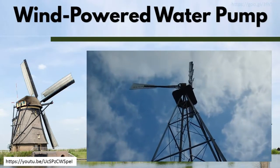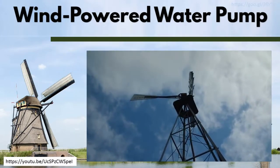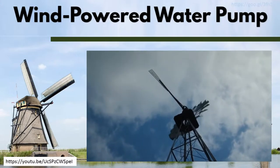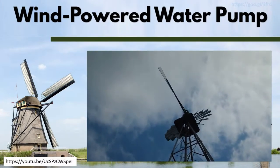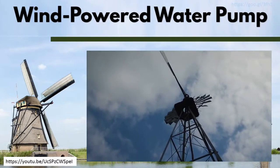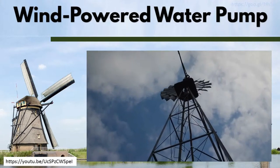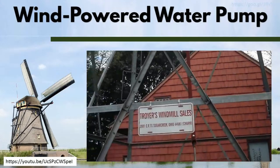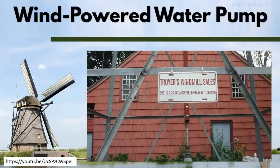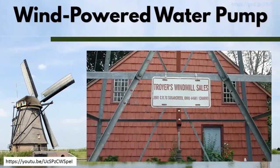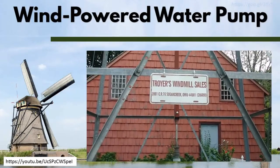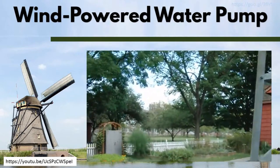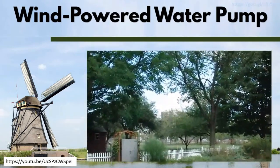Obviously there's an issue with the wind not blowing all the time — you need water but have no wind to pump it. That's why a windmill like this typically delivers water to large tanks or a cistern, so that when the wind is blowing you build a reservoir of water to use later. In modern windmills like this, there's usually also an electric pump attached as an alternative if the windmill isn't working or there's no wind.